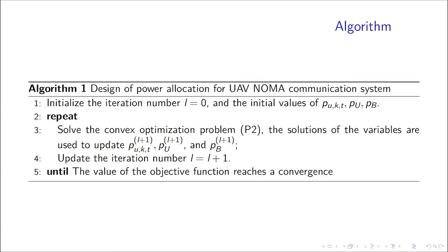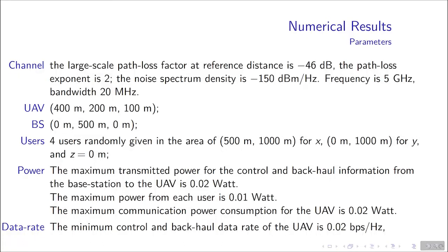Next, it's the numerical results. For the channel parameters, we set the large-scale path loss factor at reference distance as minus 46 dB, the path loss exponent as 2. The noise spectrum density is minus 150 dBm per hertz, and the system works at the frequency of 5 GHz, and the bandwidth is 20 MHz.